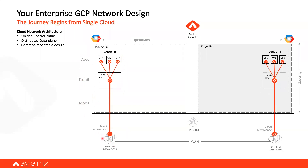This access layer is providing connectivity back to on-prem with the encryption and the visibility that you need. Then in the transit layer, I will deploy Aviatrix Transit Gateway in a high-available fashion. And this will become my hub, and I will attach spokes to it.